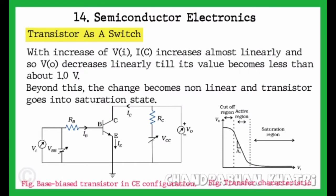With increase of VI, IC increases almost linearly, so V0 decreases linearly till its value becomes less than about 1 volt. Beyond this, the change becomes nonlinear and transistor goes into saturation state.